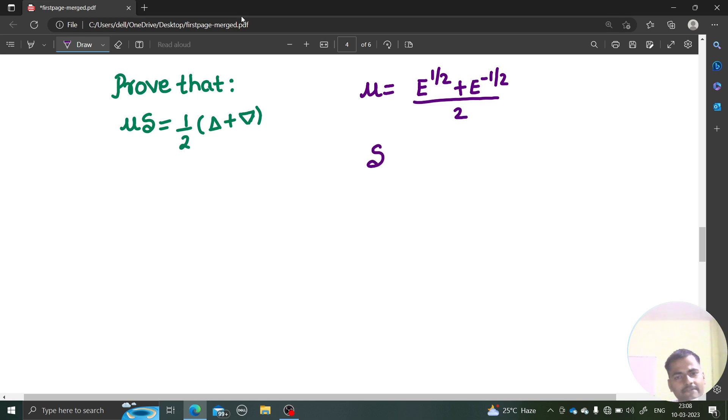If I talk about central difference operator, that is simply e power half minus e power minus half. If I talk about the forward difference operator, that is e minus 1. If I talk about backward difference operator, that is simply 1 minus e power minus 1. These are the four relations.